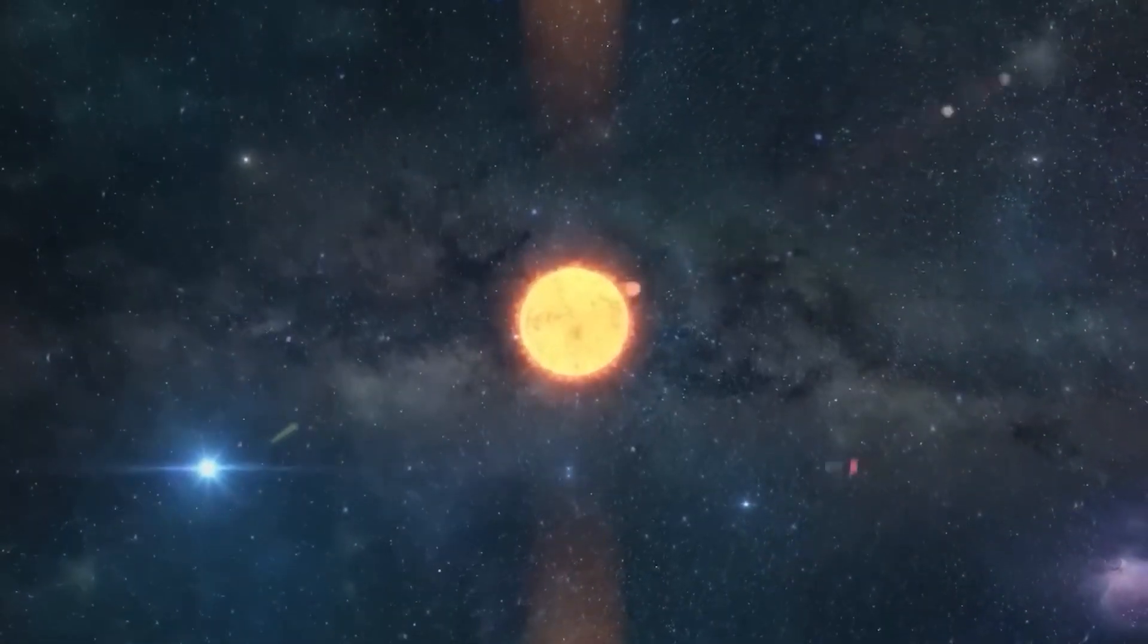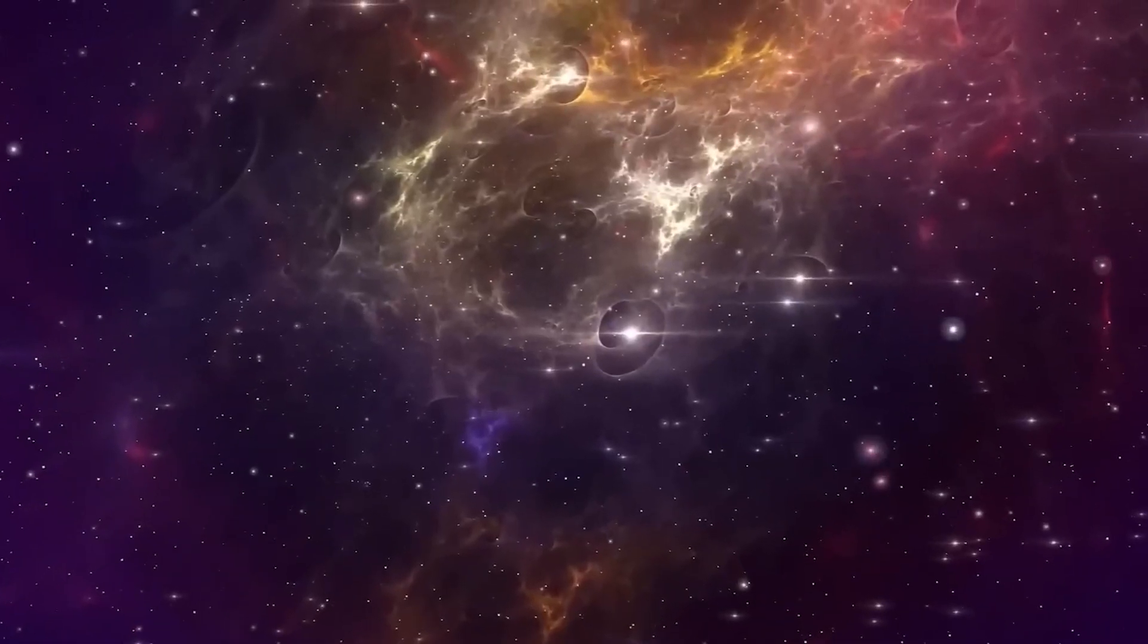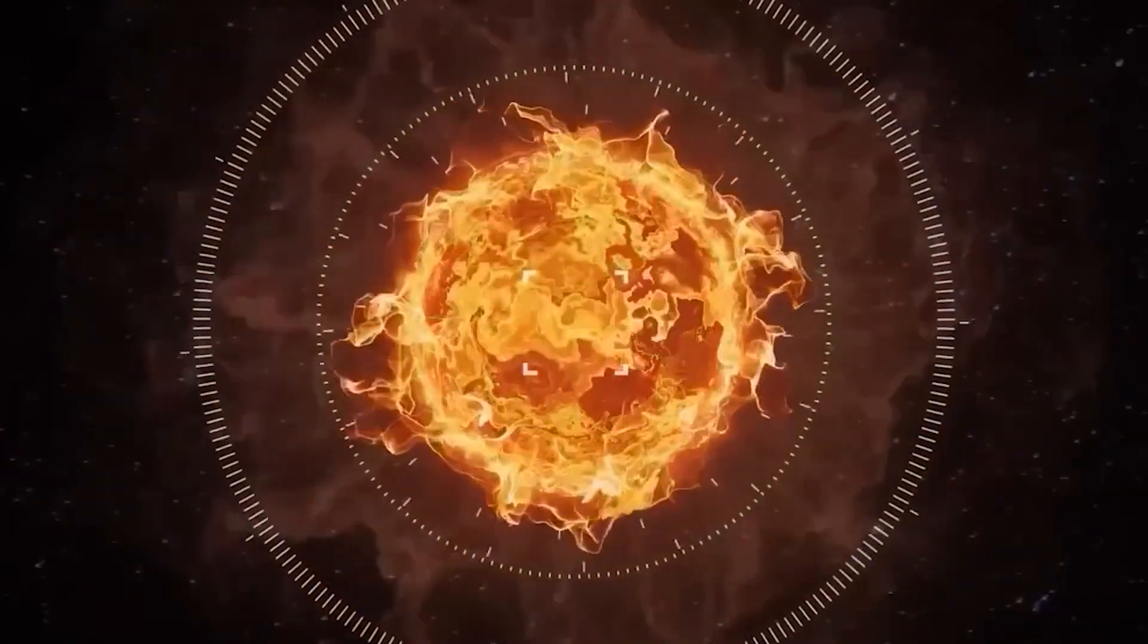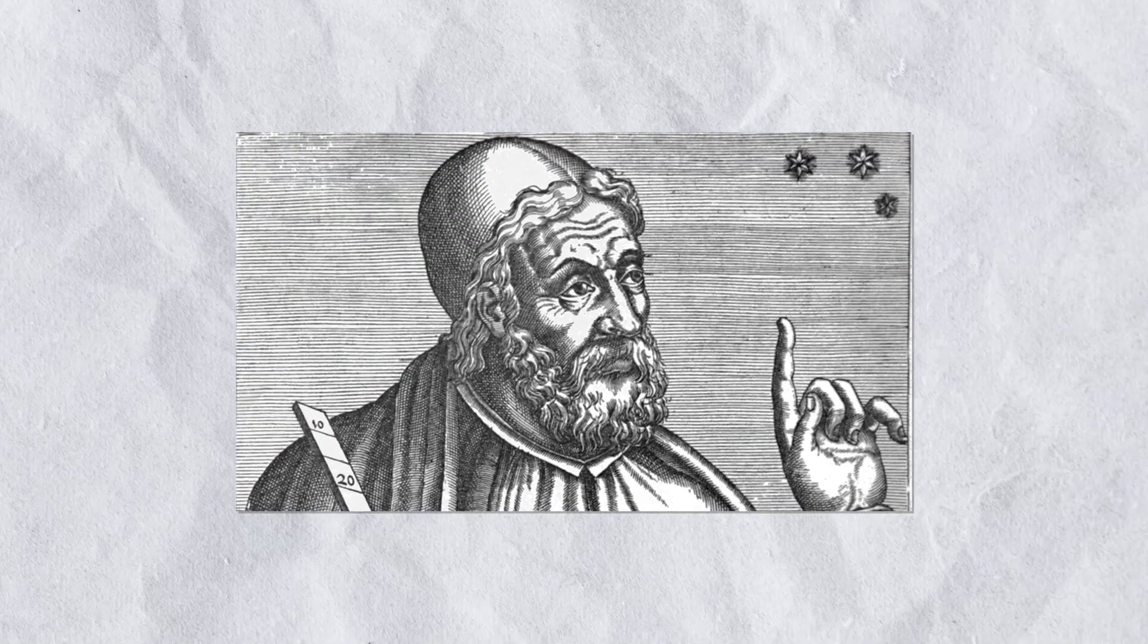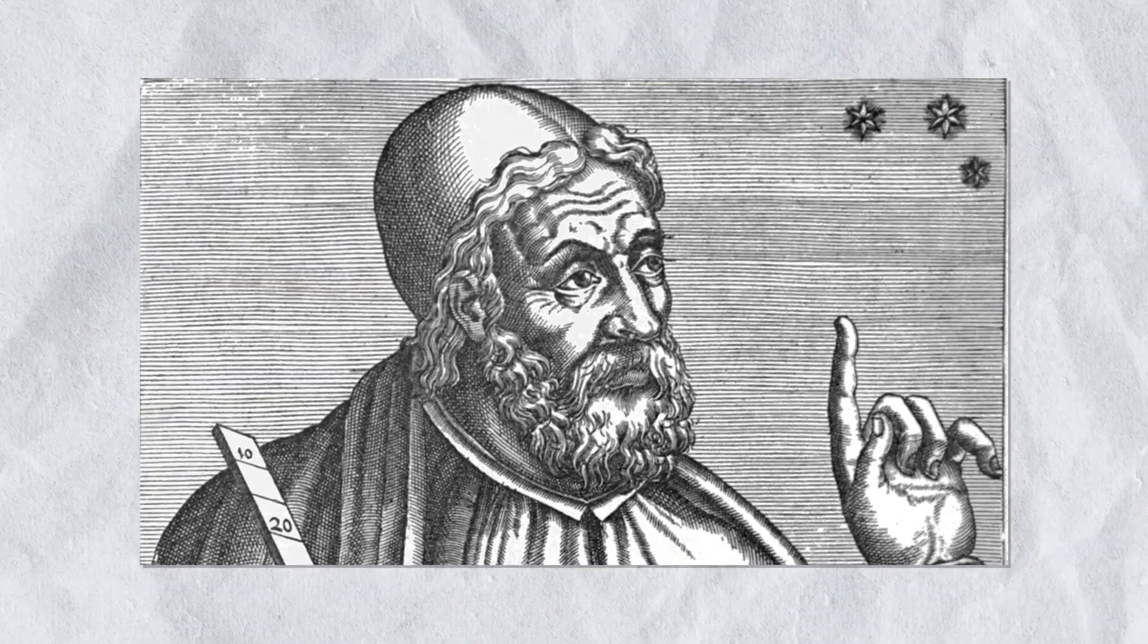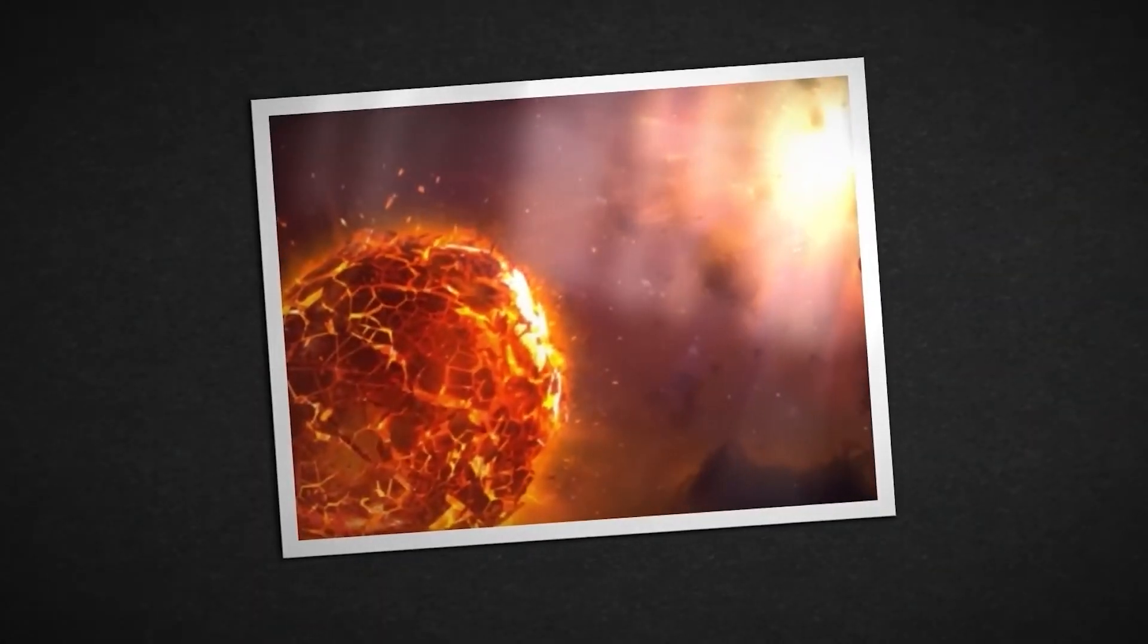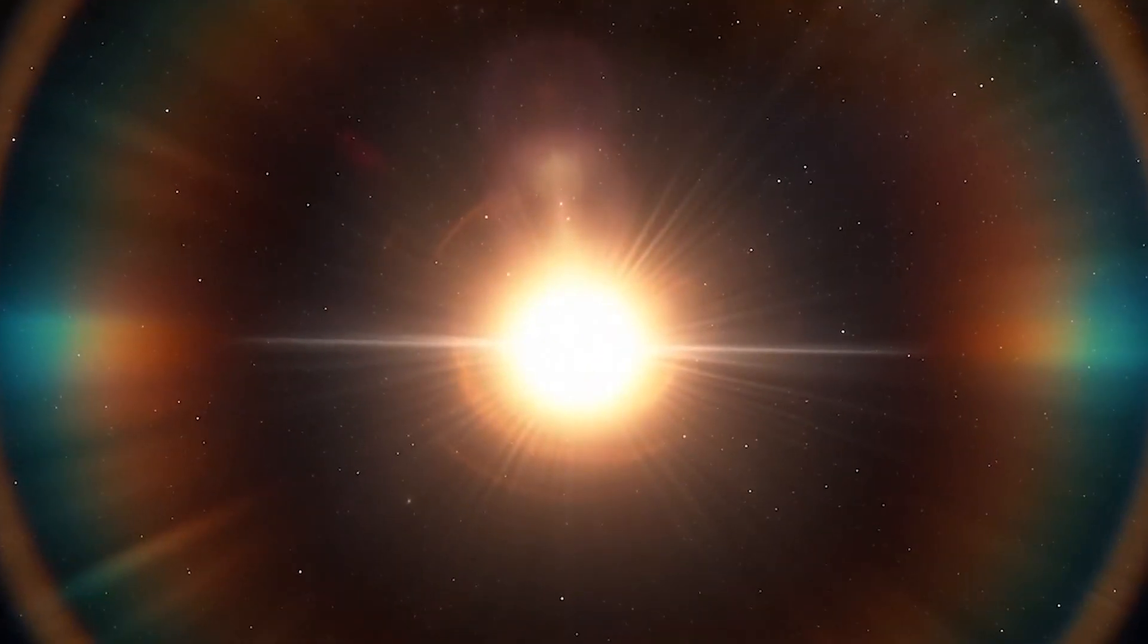However, it is worth noting that Betelgeuse may not have always possessed the reddish color commonly associated with it today. According to the ancient Greek astronomer Claudius Ptolemy, who described the color of Betelgeuse as ranging from pale yellow to reddish red, suggesting a possible variation in color over time.